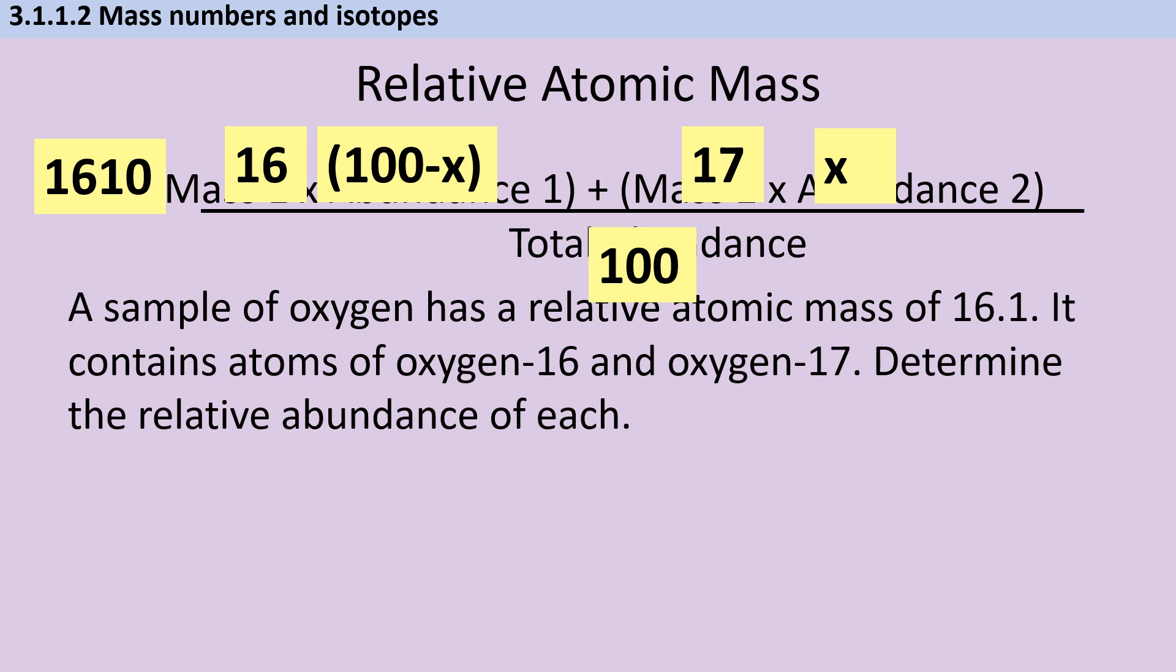If I multiply everything by 100 to stop it from being a fraction, I'm left with 1610 is equal to 1600 take 16X plus 17X. So you can see that the minus 16X and the plus 17X are going to cancel out to just give us X. So we're going to have 10 equals X, and this is why it's good to have our heavier isotope being the one that is X.